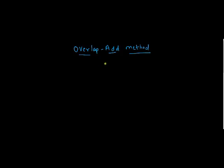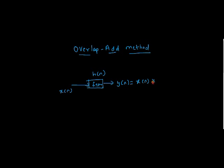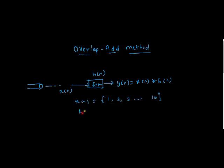Before proceeding further, we will see why we have to use this overlap-add method for convolution. Suppose you have a filter with impulse response h, and here is your input data stream x. You get output y by performing convolution, that is x of n convolved with h of n. Suppose the input sequence coming to the filter is very large — say x of n contains around 10^5 elements — and h of n is very small, say just three elements: 1, 2, 3.